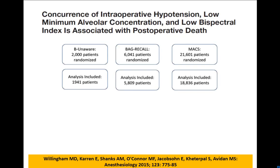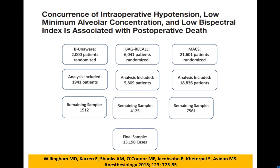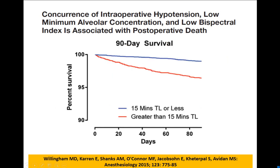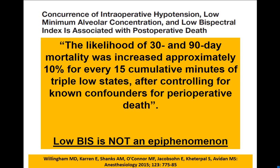The latest study comes from Mike Avedan's group in St. Louis, combining three of their awareness trials with a large number of patients — 13,000 cases in the final sample. They looked at the duration of triple low and found that as it increased to more than 60 minutes, there was a 3.5% 30-day mortality. If it didn't happen at all, mortality was virtually zero, with similar results for 90-day mortality. The Kaplan-Meier survival curves show a big difference between those with 15 minutes or less of triple low versus greater than 15 minutes. The likelihood of 30–90-day mortality was increased approximately 10% for every 15 cumulative minutes of triple low state, after controlling for known confounders.